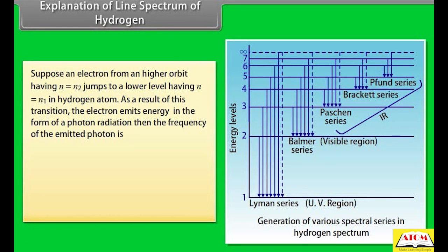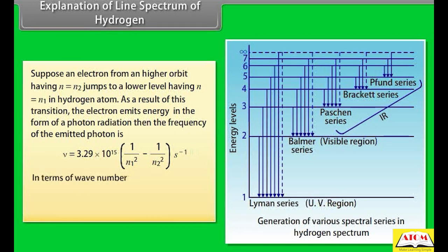Suppose an electron from a higher orbit (n = n₂) jumps to a lower energy level (n = n₁) in a hydrogen atom. The electron emits energy as a photon. The frequency of the emitted photon is: ν = 3.29 × 10¹⁵ × (1/n₁² − 1/n₂²) per second. In terms of wave number: ν̄ = 109,677 × (1/n₁² − 1/n₂²) per centimeter.